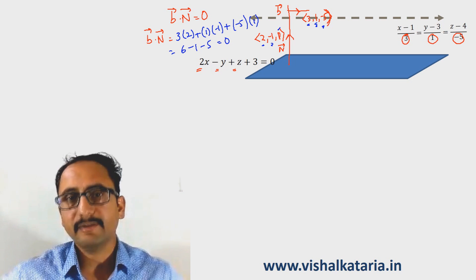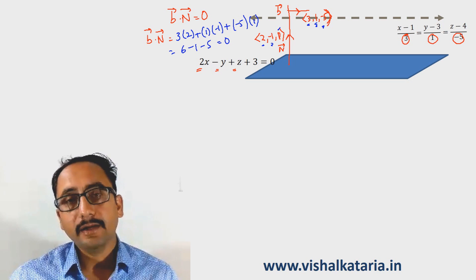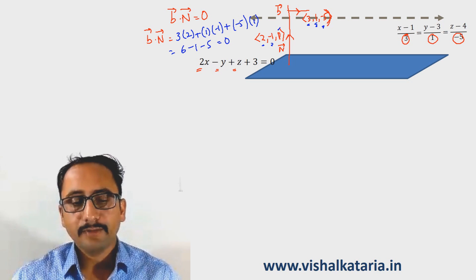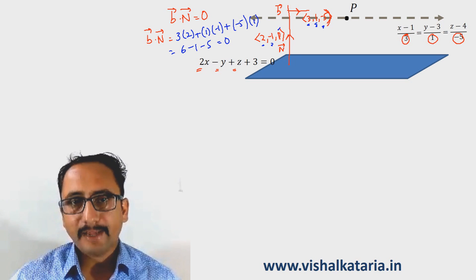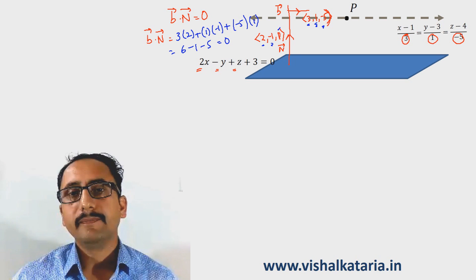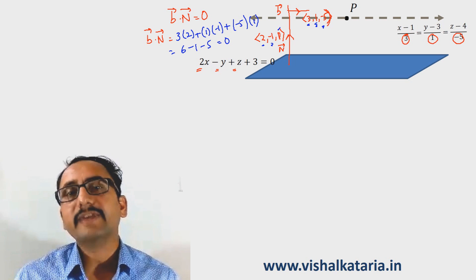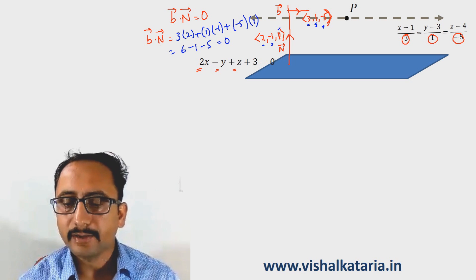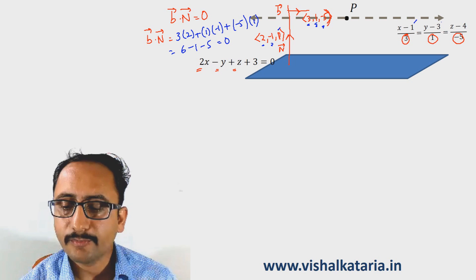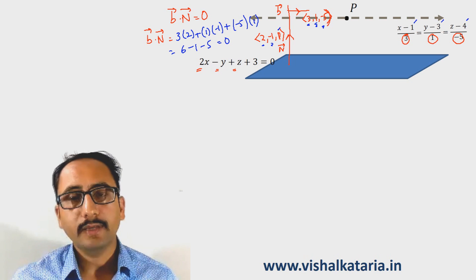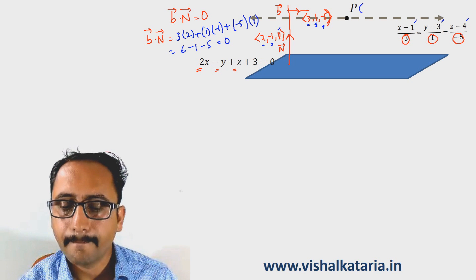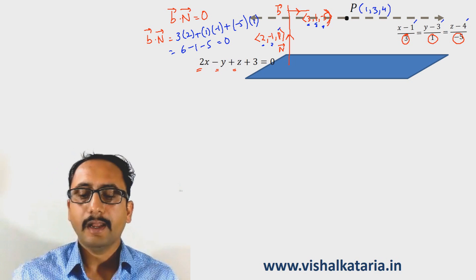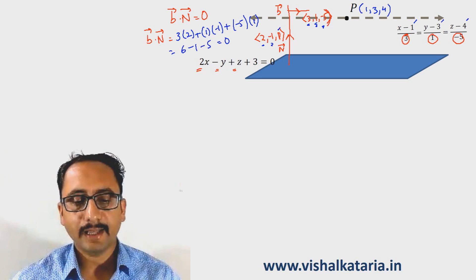Now we are sure that the given line is parallel to the given plane, so we will find the image of this line. From the equation of the line I can find a point P. Point P is a given point on the line, and the coordinates of point P are 1, 3, 4. I will use this point to find the image of the line.